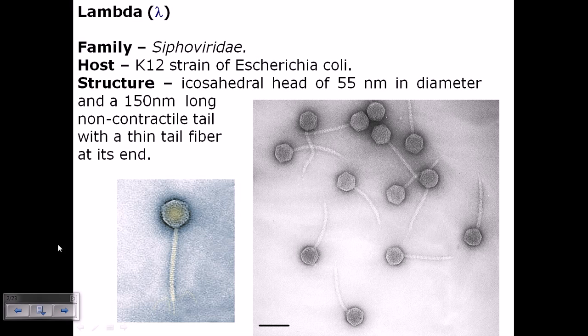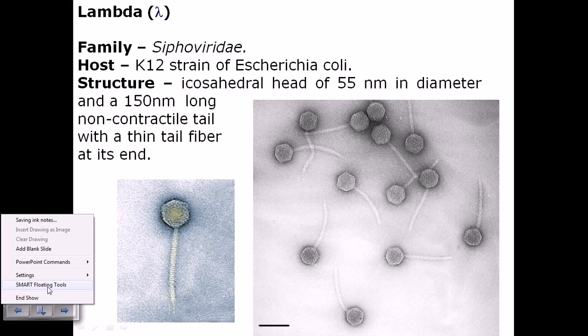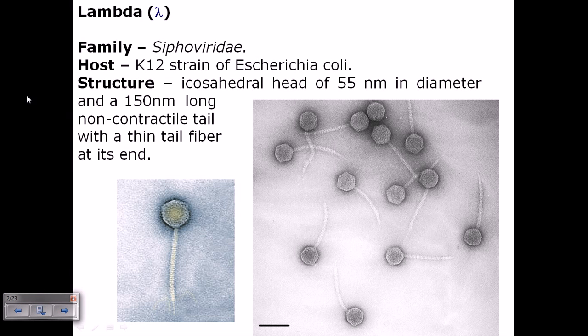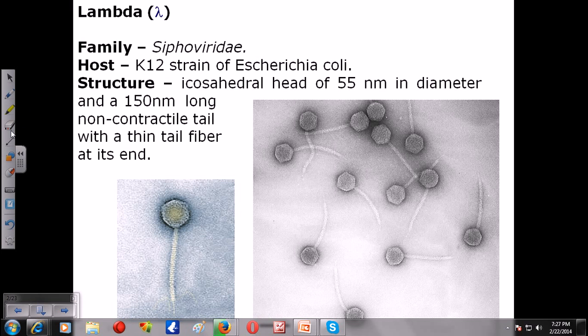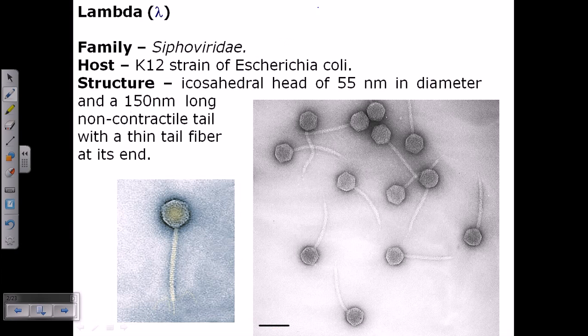Lambda is a bacteriophage because it infects bacteria - it's a virus that infects bacteria. Lambda belongs to the family Siphoviridae because their structure resembles a siphon. The host for this lambda phage is the K12 strain of E. coli. E. coli has many different strains, among them K12 is a very important strain, and this lambda infects the K12 strain of E. coli.